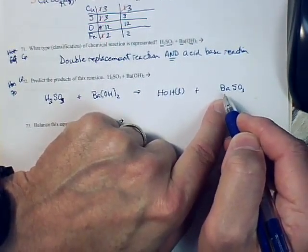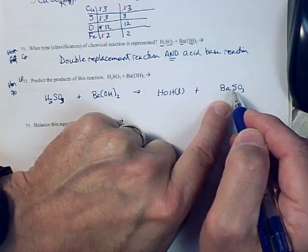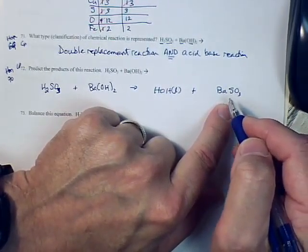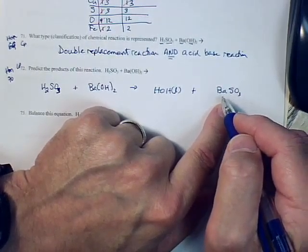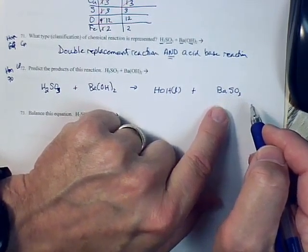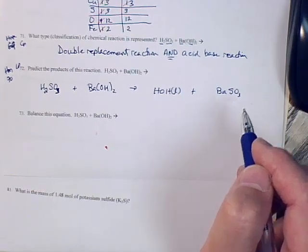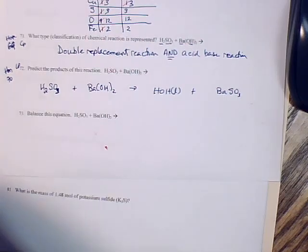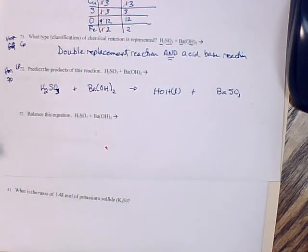So we have a 2-plus charge and a 2-negative charge. That then balances out those two charges, and we have one of these and one of these in this balanced formula. We need to know if this barium sulfite is going to be solid or aqueous. Now if you're in a CP class, you can look it up on the solubility rule.